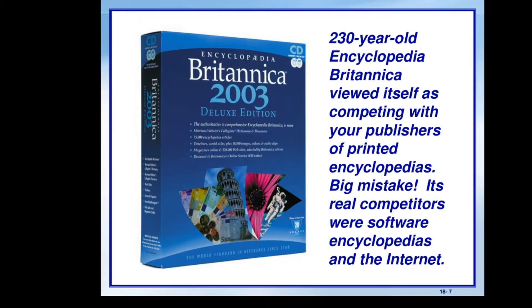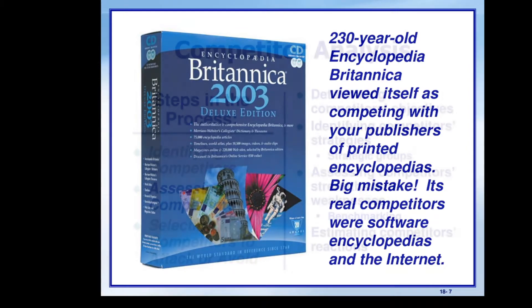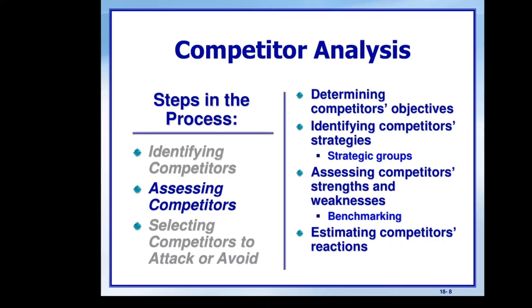Britannica is an encyclopedia. Many people might think the competitors for an encyclopedia are other publishers, but nowadays the real competitor is software encyclopedias on the internet. When assessing competitors, you should determine their objectives, strategies, weaknesses, and strengths. You should not target the strength — identify the weakness and target that so you can win in that particular market.